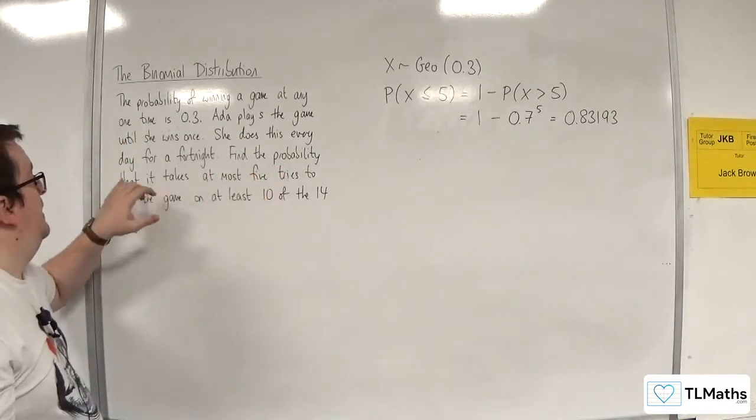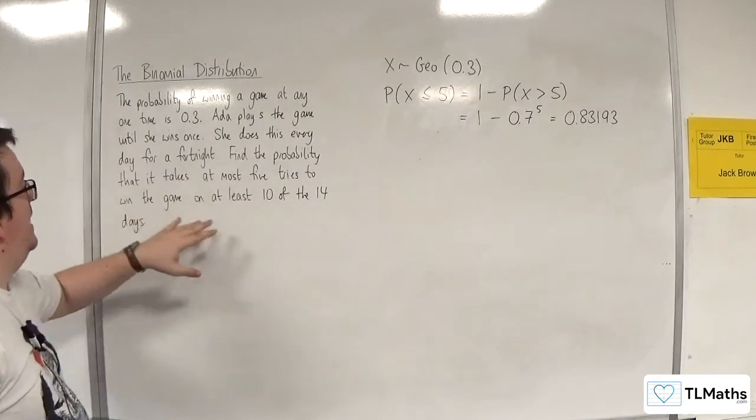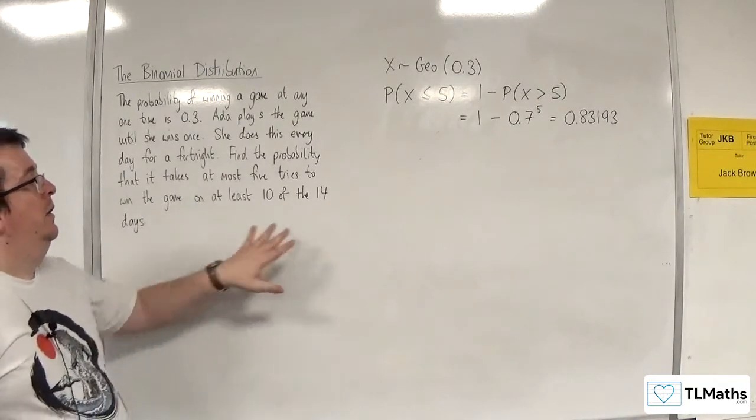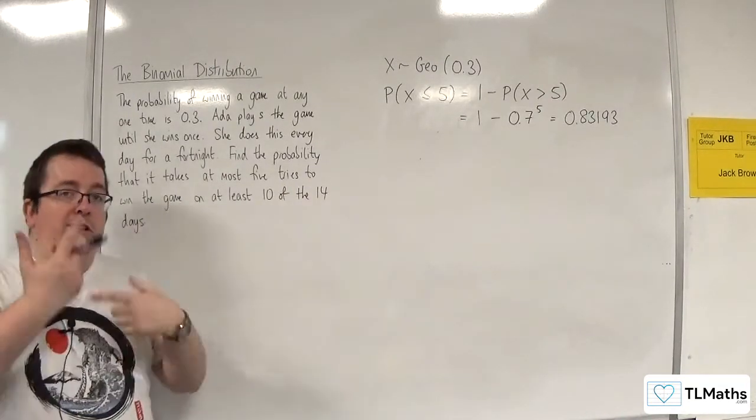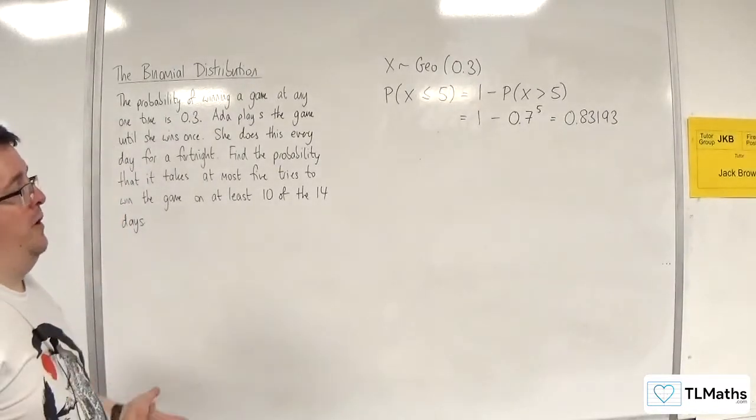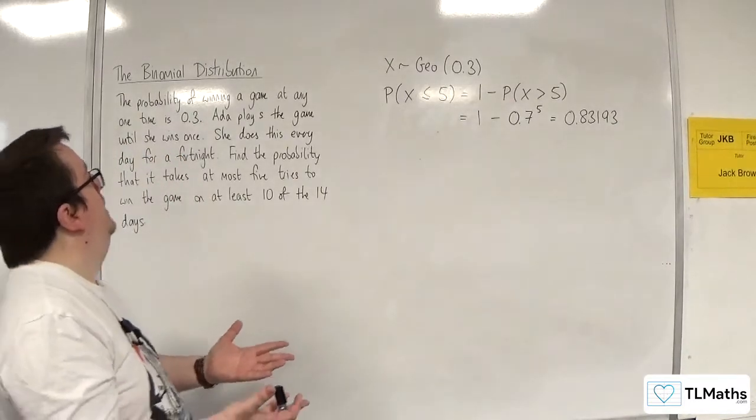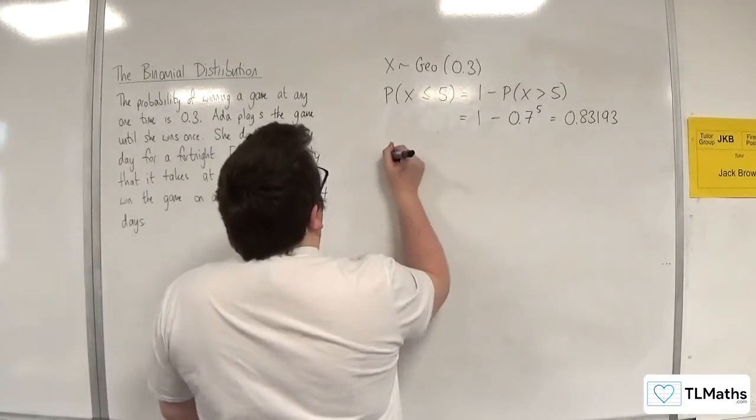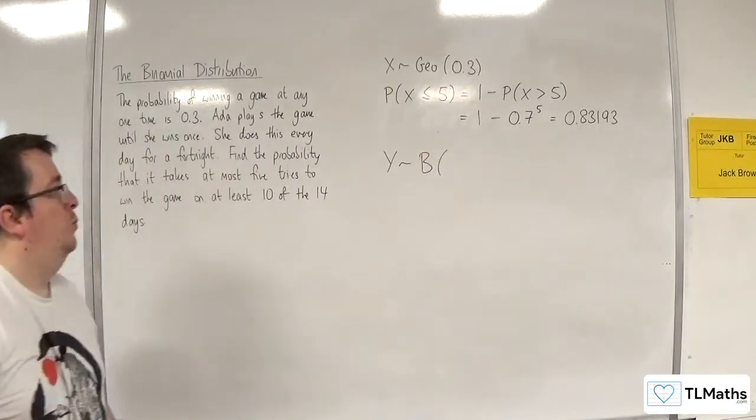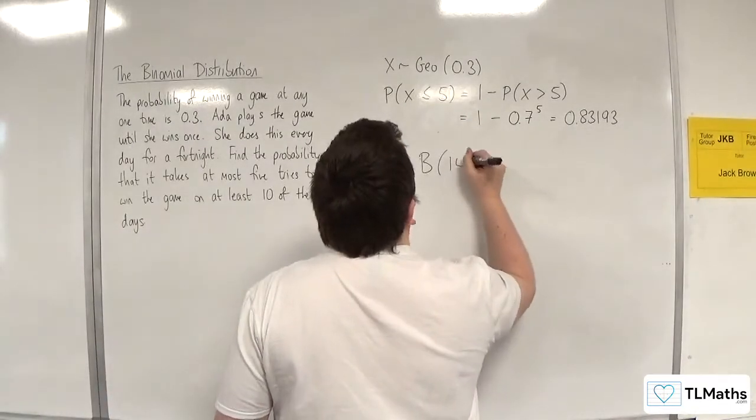Now find the probability that it takes at most five tries to win the game on at least 10 of the 14 days. Each day will be independent of the next, because we know the trials are going to be independent anyway. So now it becomes a binomial distribution, where we've got 14 days. There are 14 trials.